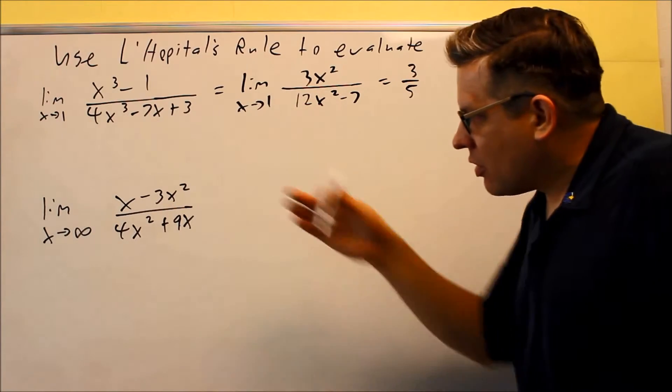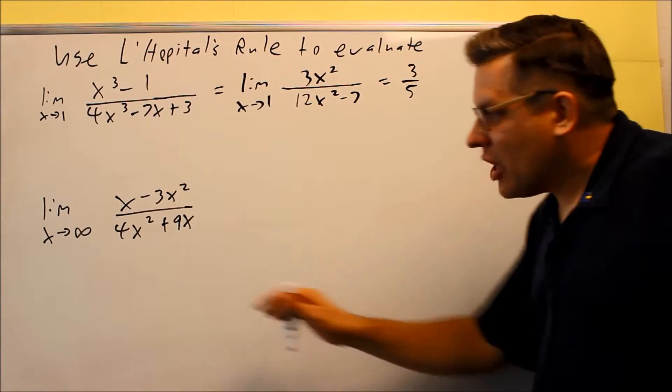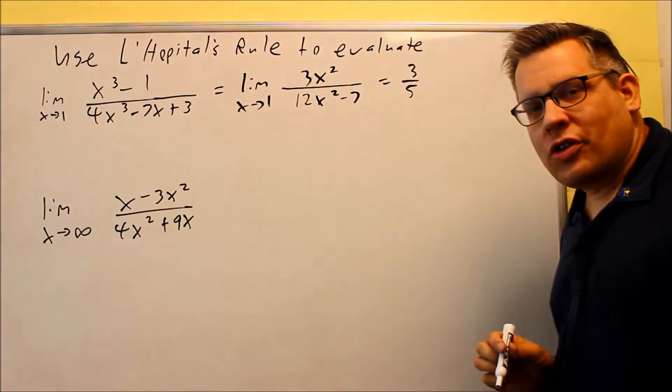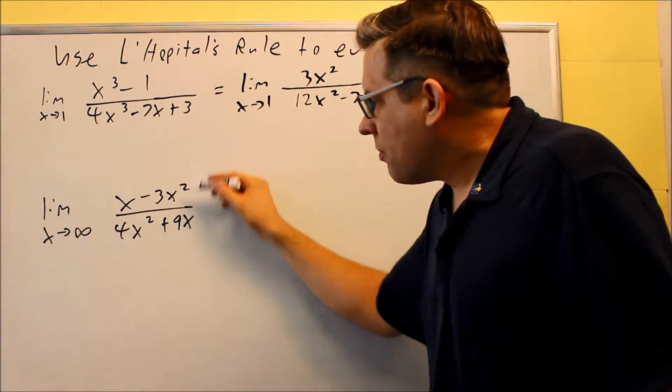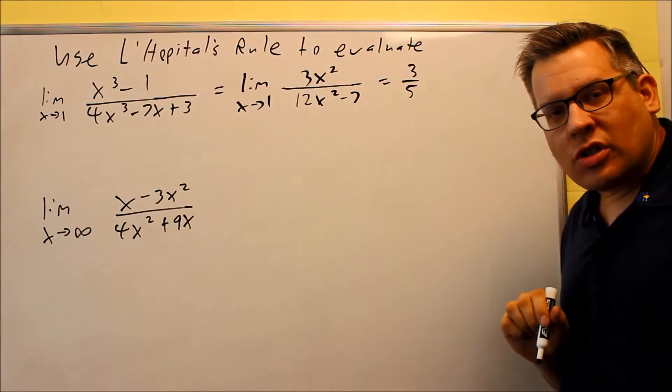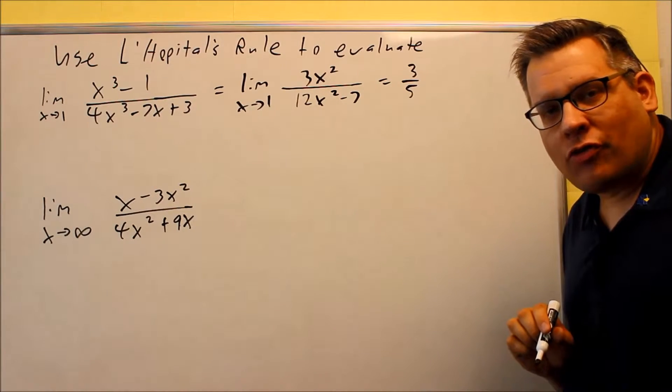Now let's look at this example. Now this example we're going to be going to infinity. So if I put infinity in here, I'm not going to get zero over zero, instead I'm going to get infinity over infinity.